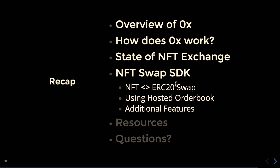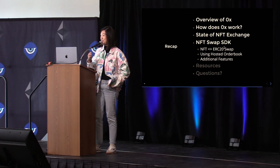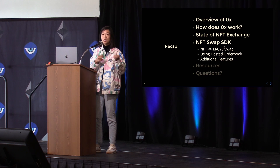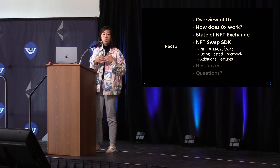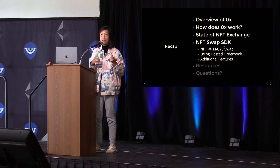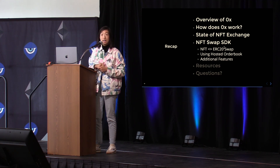To summarize what we covered: we went through a simple NFT-to-ERC-20 swap — and note that it can be reversed, so the maker could say they have 2,000 USDC and they're looking for an NFT. We talked about how to use a hosted order book, and we covered the additional features of the SDK.